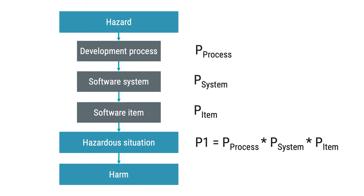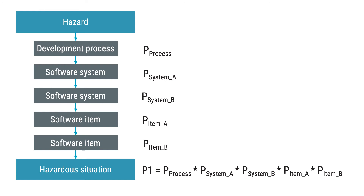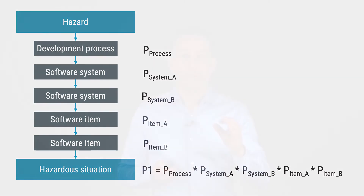When working with software risk management, your goal is to reduce the likelihood of failure within the software, and you have several options to achieve this. There is nothing holding you back from combining risk controls from all three alternatives. If you combine several risk controls, it is logical to assume that the likelihood of failure will become lower. You're free to multiply as many numbers as you want to, but be careful — if you multiply many small numbers, you will end up with zero. But we are talking about software, and regardless of the number of software risk controls you implement, there's always a remaining risk.